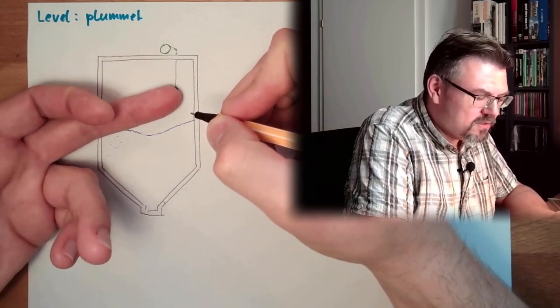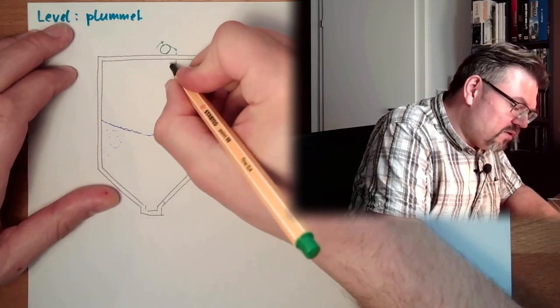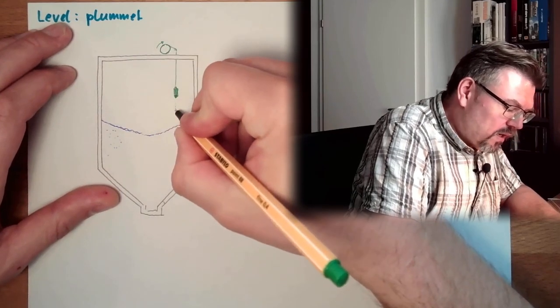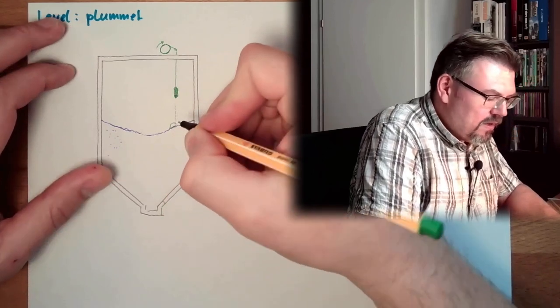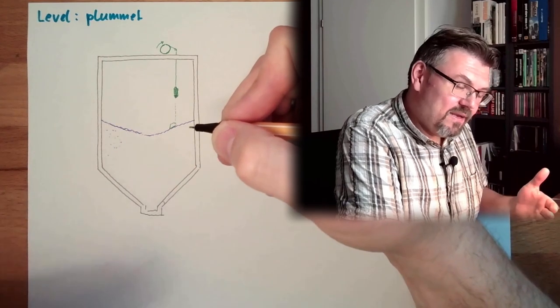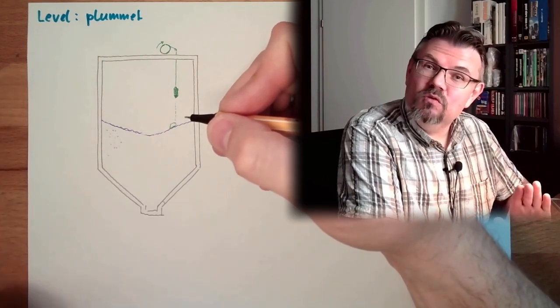It will pull the string and so the motor will start moving in this direction, the plummet will go down. And once it reaches the top, the rope will not be tight again, this will be noticed. And then we know, okay, we hit the surface.